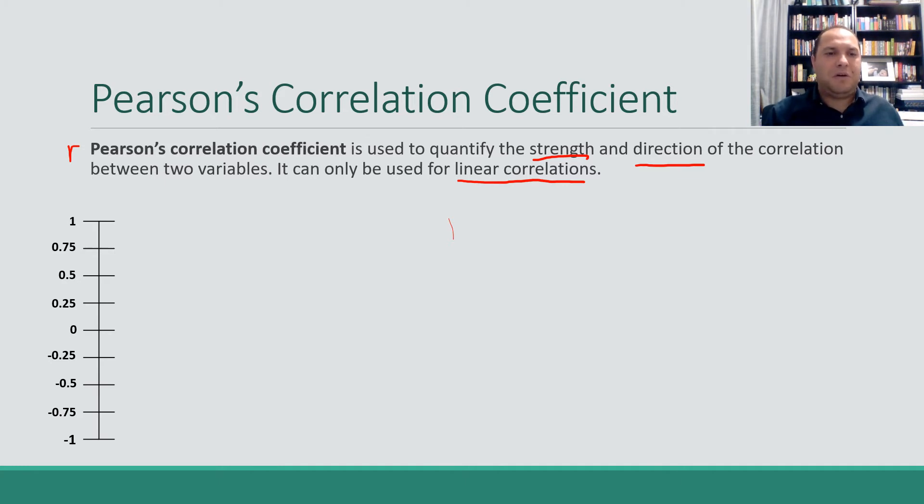So Pearson's correlation coefficient goes between one at the very top to negative one at the bottom. All of these values where the R value is positive, that's going to be a positive correlation. And all these values from zero downwards, those are going to represent a negative correlation. So this makes sense. Positive R value, positive correlation, negative R value, negative correlation.